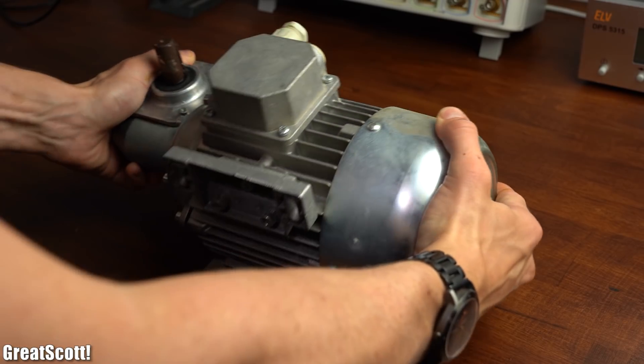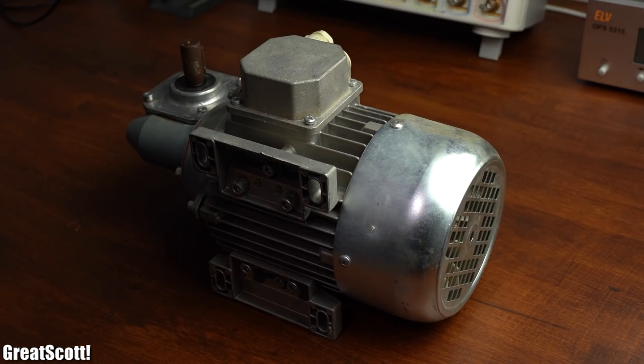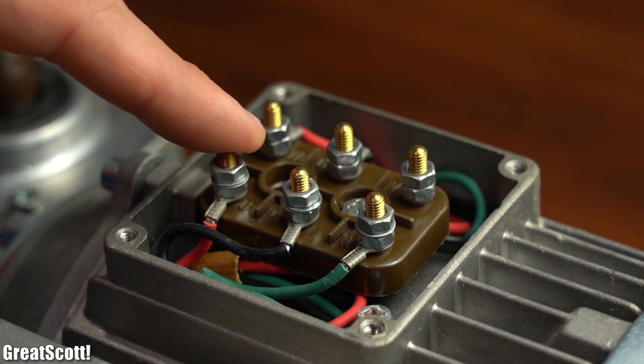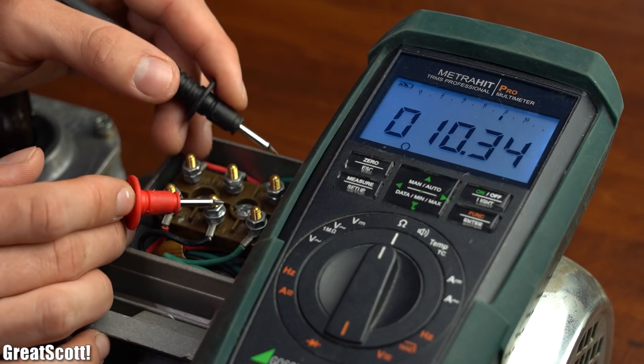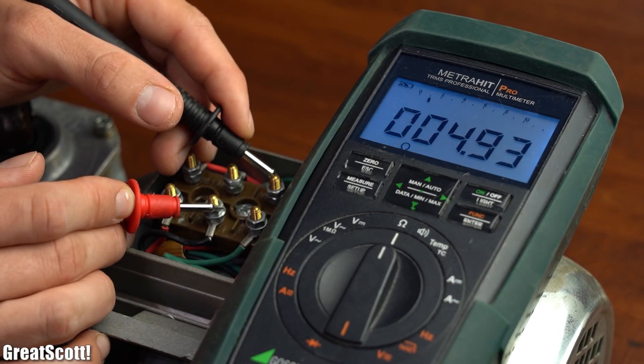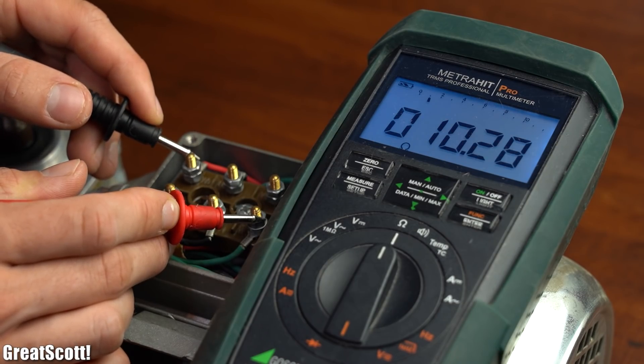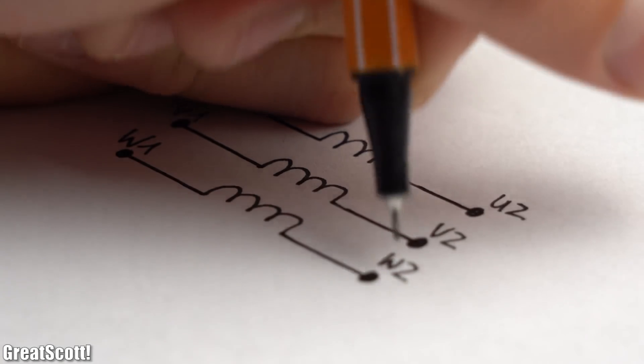First off in order to understand how this motor works I opened up its terminal box and was promptly greeted by 6 connector wires. Through the help of my multimeter I found out that the wires U1, U2, V1, V2 and W1 and W2 all form a separate coil.